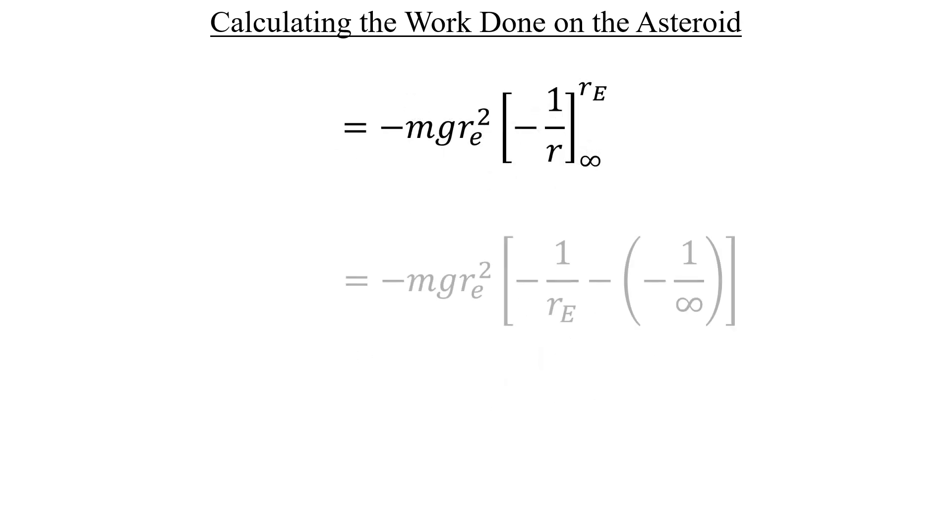When we evaluate at the endpoints, thankfully, this negative 1 over infinity portion will just go to zero, and that just leaves us with negative 1 over the radius of the Earth multiplied by all the constant stuff that we factored out earlier. When we multiply, the negatives disappear, and we're left with just mg times the radius of the Earth.